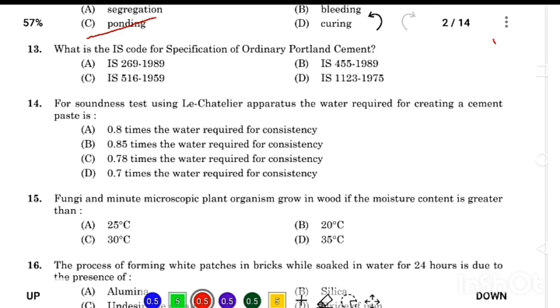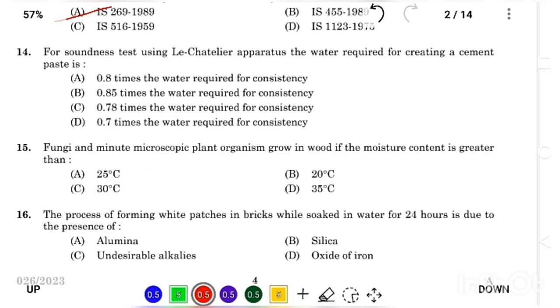What is the IS code for specification of ordinary Portland cement? Answer Option A, IS 269 1989. For soundness test using Le Chatelier apparatus, the water required for creating a cement paste is Answer Option C, 0.78 times the water required for consistency.